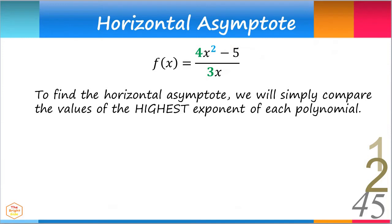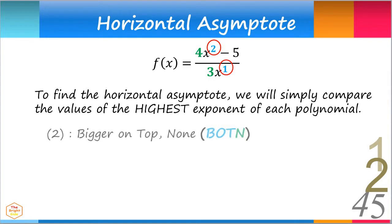Now notice: in the numerator, the highest exponent is 2, and in the denominator, it is 1. The exponents are bigger on top. This means there is no horizontal asymptote.